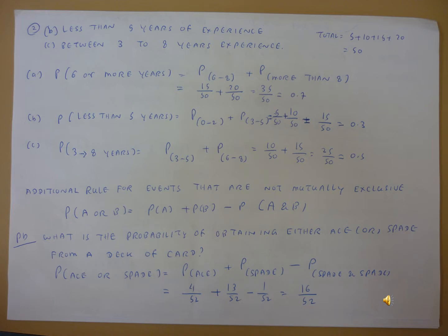We can calculate the 3 to 8 years experience wearers. That will be the 3 to 5 years experience plus 6 to 8 years experience wearers combination probability. So P(3 to 8 years) equals P(3 to 5) plus P(6 to 8). The 3 to 5 years experience wearers is 10, total number is 50, so that's 10 divided by 50.